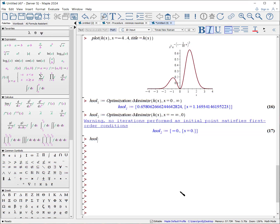h_solution_2 colon equals optimization colon dash maximize colon dash h(x). And again, we're going to say where x is equal to minus infinity, only in this region, then escape, infinity escape, dot dot 0, comma,